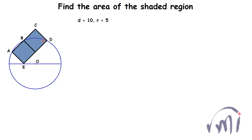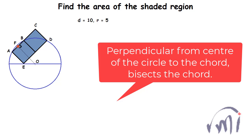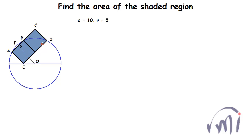I have named the center as O and the other points as A, B, C, D, and E. AB over here is a chord, and if I draw a perpendicular from point O to AB and call this point F, then OF will be perpendicular to AB, point F will be the midpoint of AB, and OF will also be perpendicular to DE because DE and AB are parallel.